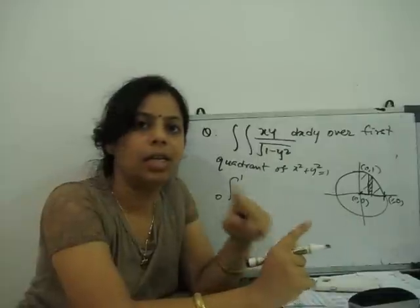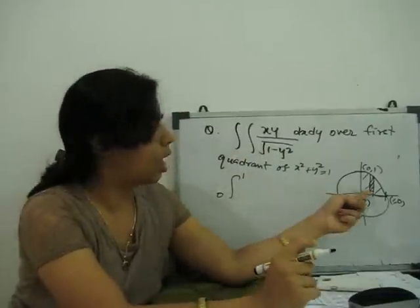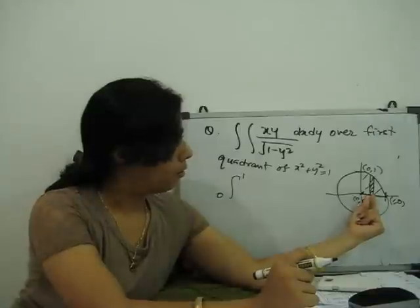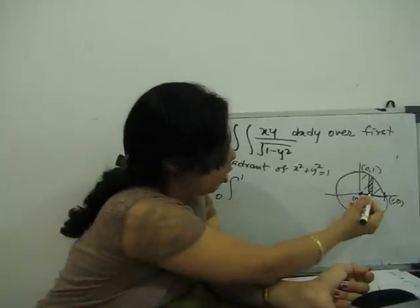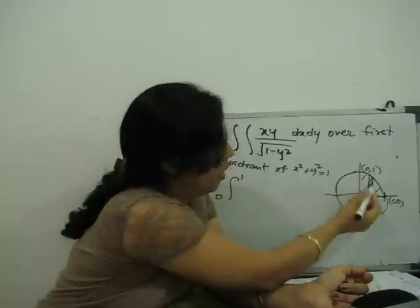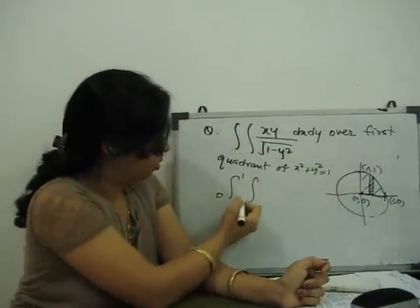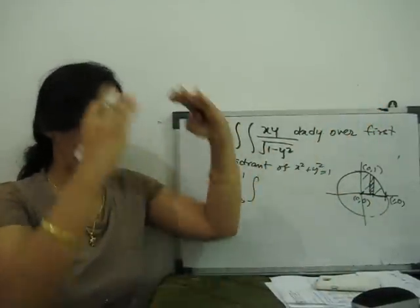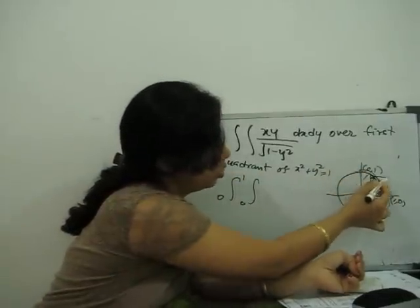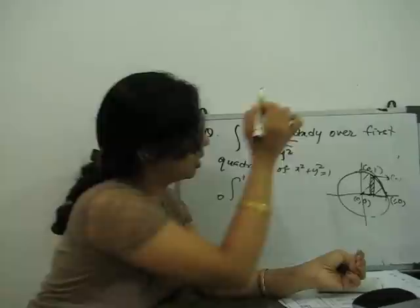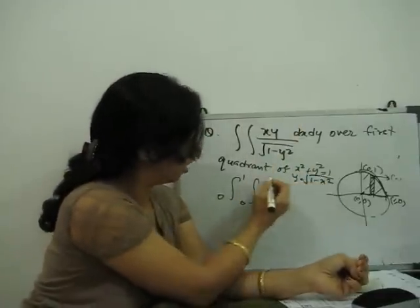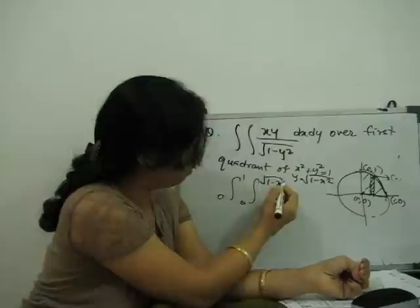That we learned in change of order of integration. Now we go from this side. So x is equal to 0 to 1. Y, y is the lower point. Y is here, here, here, here, y is also 0. But the higher limit, or we can say upper limit, the upper limit changes according to this curve. And this curve is y equals under root of 1 minus x square.